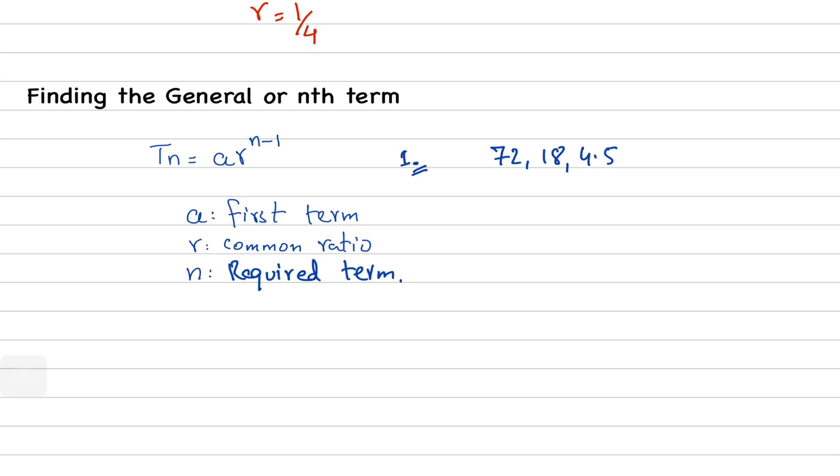Now, what is the common ratio here? Here we have a common ratio 1 upon 4. And what is a here? a here is 72.